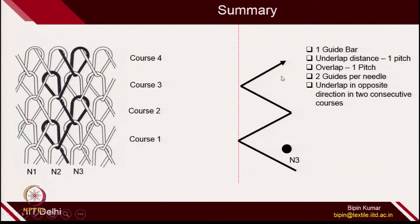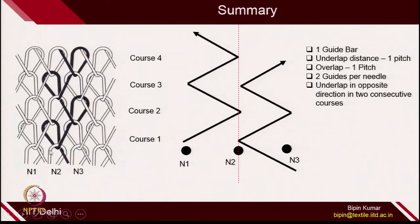In the last class, I also mentioned how the needles were interacting with different guides during loop formation. In this structure, all the guides have the same movement, so they can be attached with the same guide bar. We have an underlap distance of 1 pitch. The overlap distance on the front side is also 1 pitch. We have 2 guides per needle, and underlaps are in opposite directions in alternating courses — first time the guide moves left to right, then right to left.